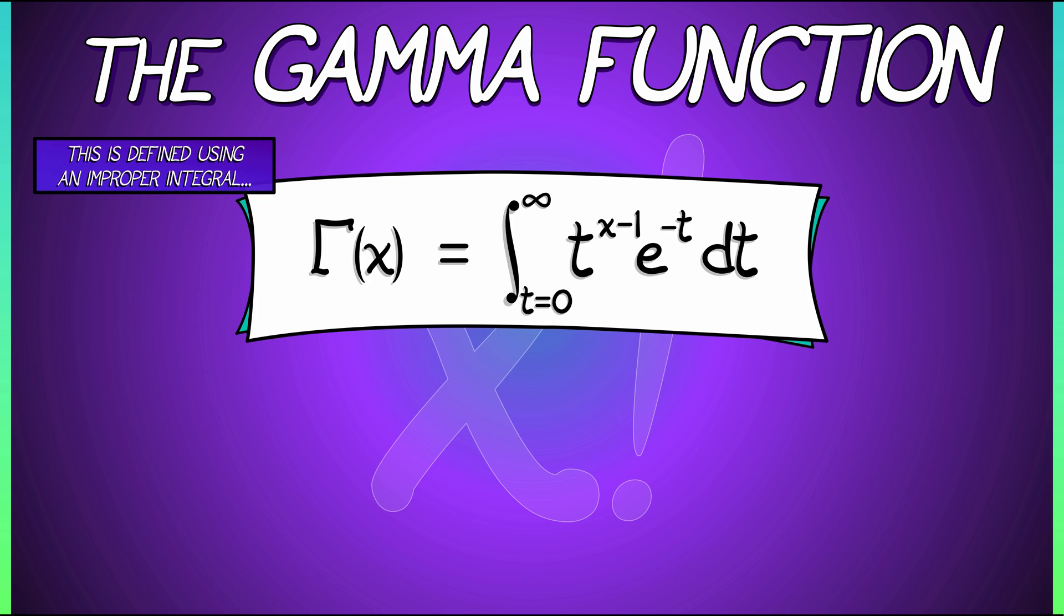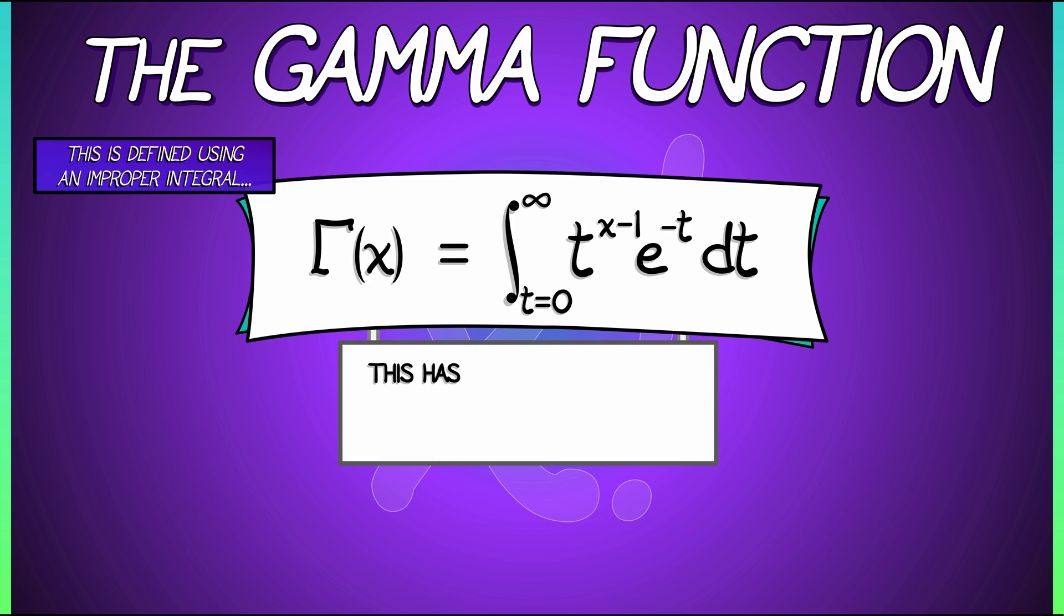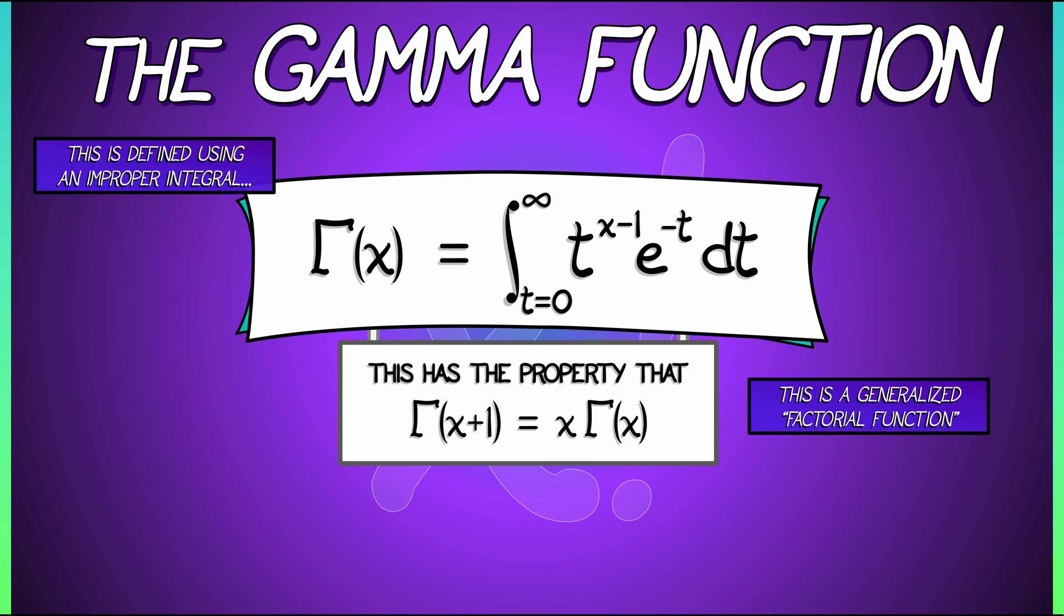This function has the property that gamma of x plus 1 equals x times gamma of x. What that means is that this gamma function is really like x factorial. To be precise, gamma of n plus 1 equals n factorial for n, a positive integer.